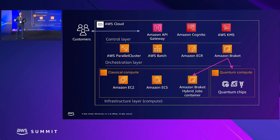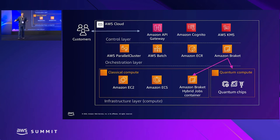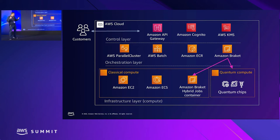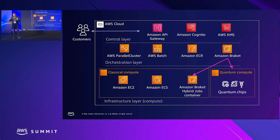In the control layer, for example, there is KMS for managing keys across customer applications. Braket sits in the orchestration layer alongside services like AWS Batch. I find it fascinating that while these machines are still at an early stage, you can start thinking about a different type of compute — a new way to deal with computation — and how it fits inside AWS.